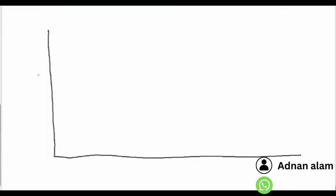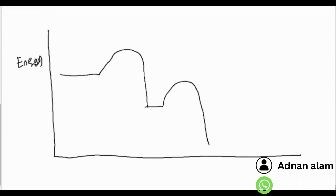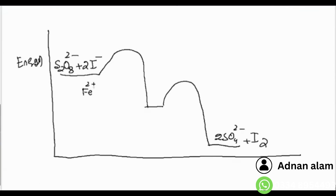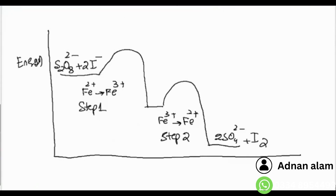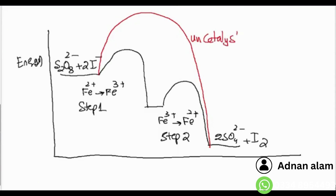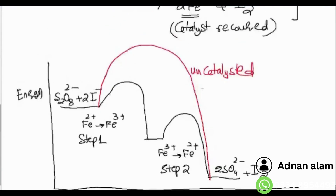The energy profile diagram when Fe²⁺ is used as catalyst also shows two peaks — step 1 and step 2. The reactants are S₂O₈²⁻ and 2I⁻, and products are 2SO₄²⁻ and I₂. The uncatalyzed reaction has one high peak, while the catalyzed reaction has two lower peaks.